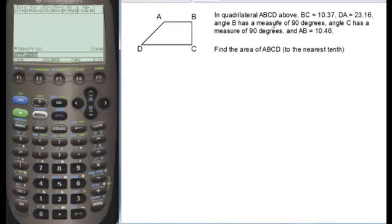In this problem we are told that angle B is 90 degrees and angle C is 90 degrees. That tells us we're dealing with a trapezoid here. We know that BC is a length of 10.37, DA is 23.16, and AB is 10.46.